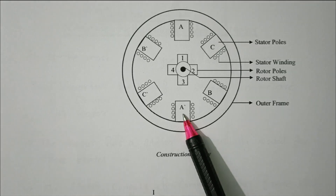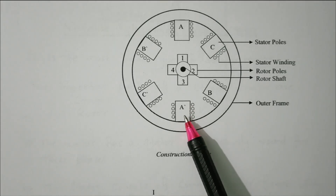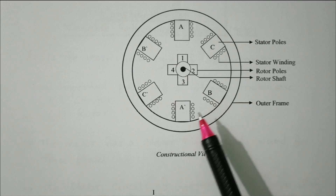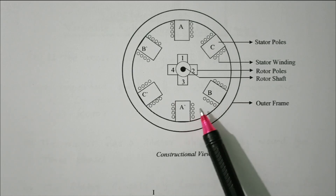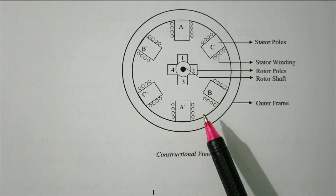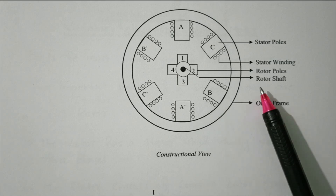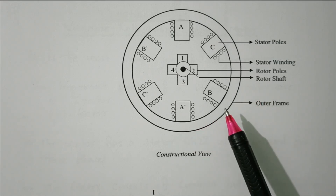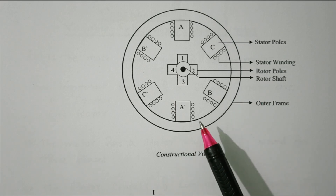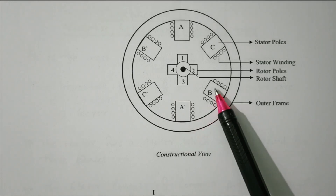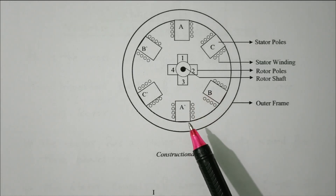The rotor will align with the A A-dash position in the minimum reluctance path. Then B B-dash is excited and A A-dash is unexcited, and so on. If we excite in the sequence A-B-C-A, it will go for clockwise rotation; A-C-B-A means it will go for counter-clockwise rotation. So the rotation is controlled by the excitation sequence of the coils.